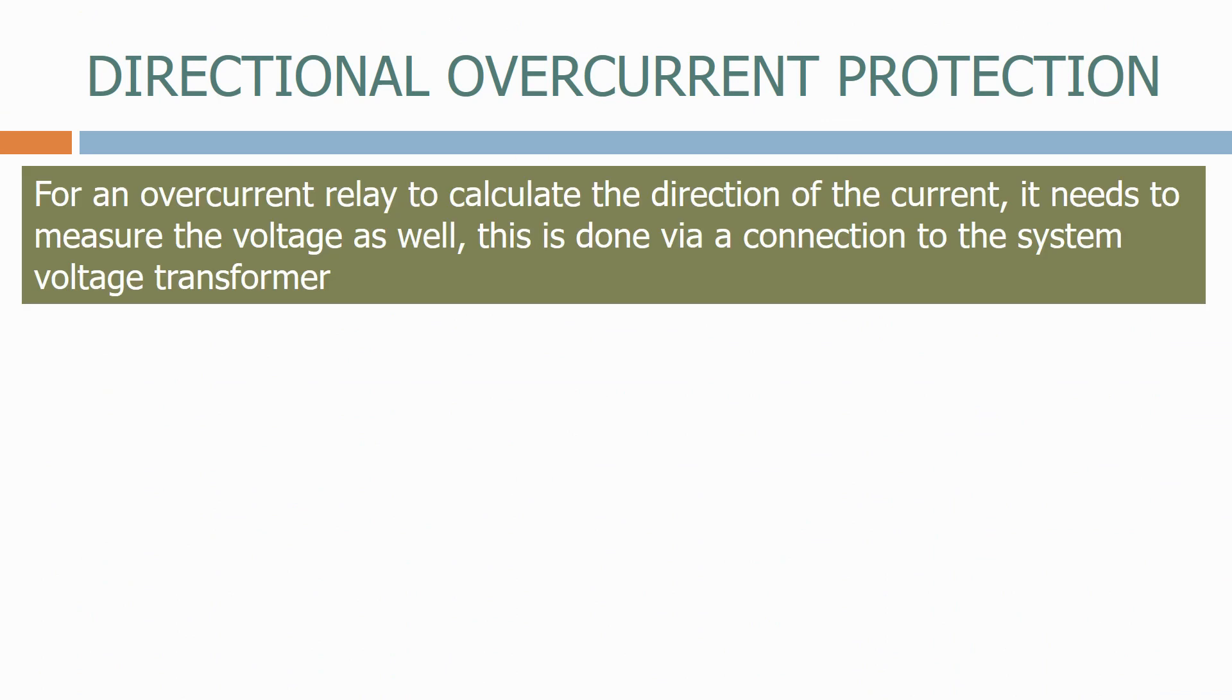For an overcurrent relay to calculate the direction of the current, it needs to measure the voltage as well. This is done via the connection to the system voltage transformer.